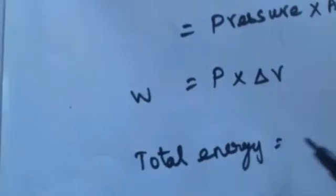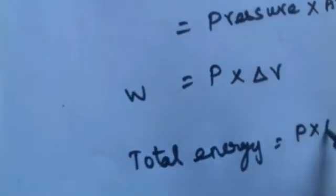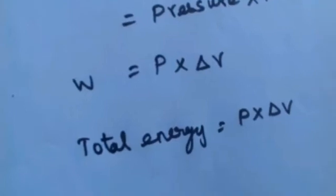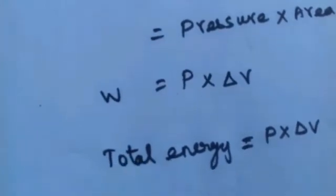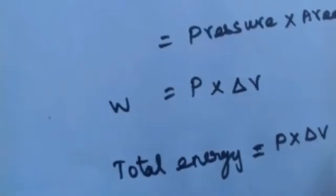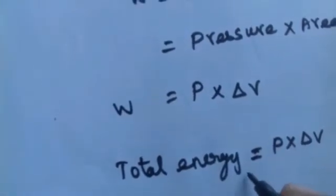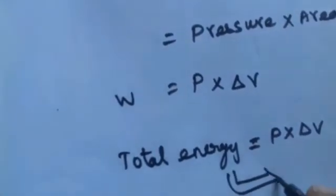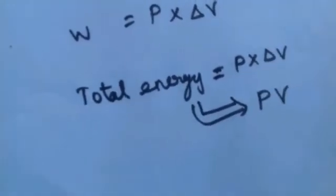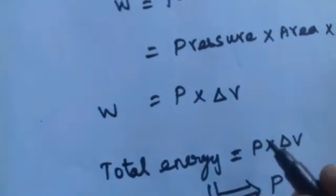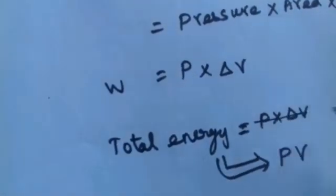That is, if you see total energy of the gas system, P into del V is a small change, small energy. The total energy is PV, pressure into volume.